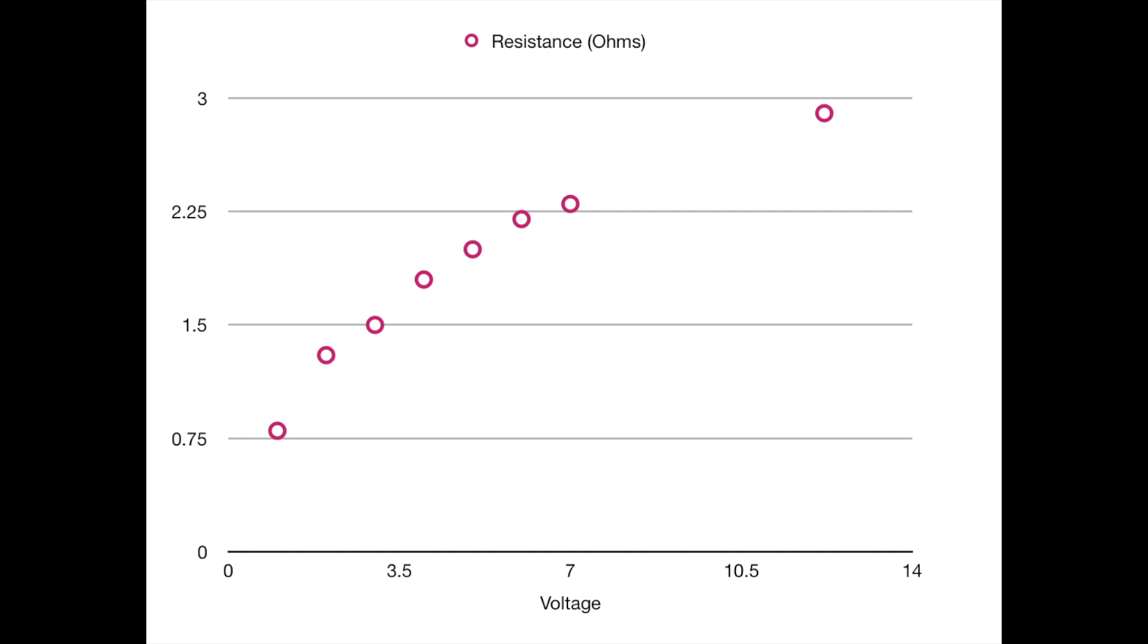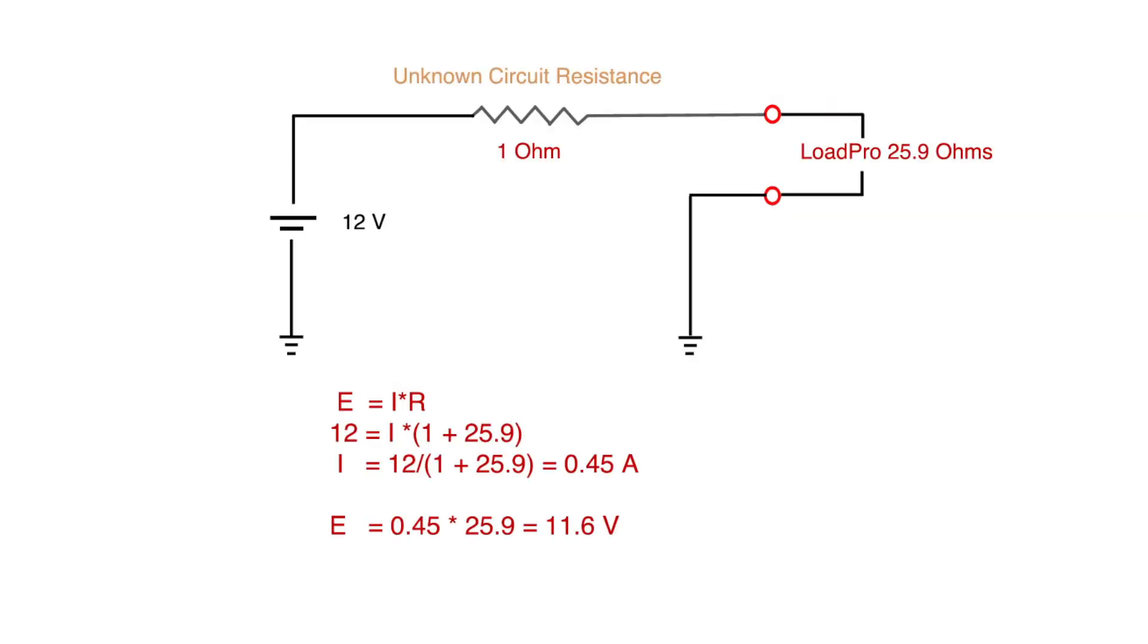So supposing at low current levels your corrosion only adds 1 ohm of circuit resistance. Well then total current is 0.446 amps and the voltage drop across the Load Pro increases to 11.6 volts putting us well into the equivocal range. The Load Pro is not better.